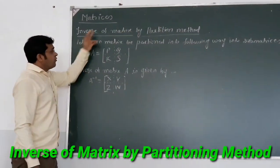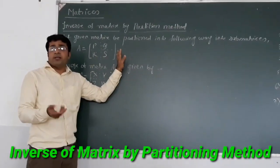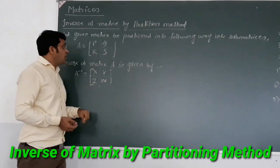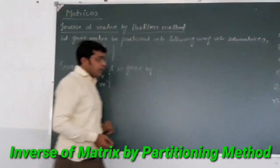First of all, we select one matrix A. That matrix A may be of order 2 by 2, 3 by 3, or 4 by 4 at the most. And we partition that matrix into four parts: P, Q, R, S.